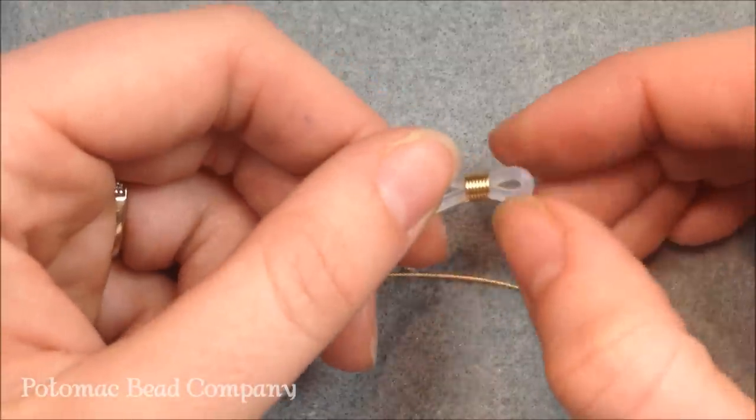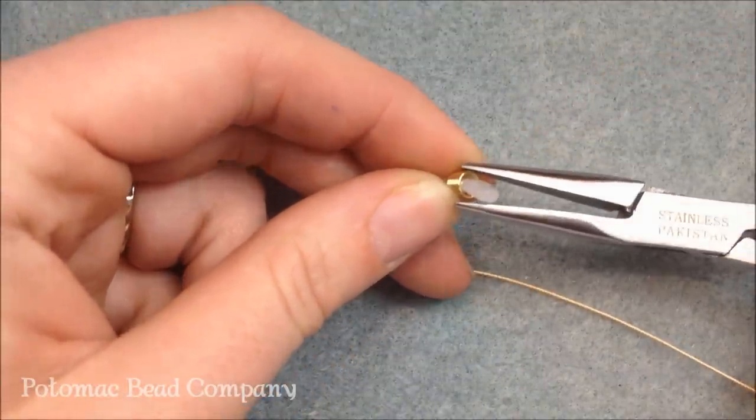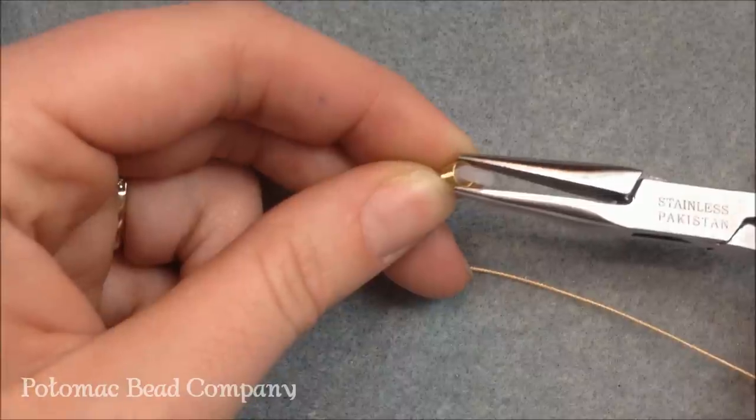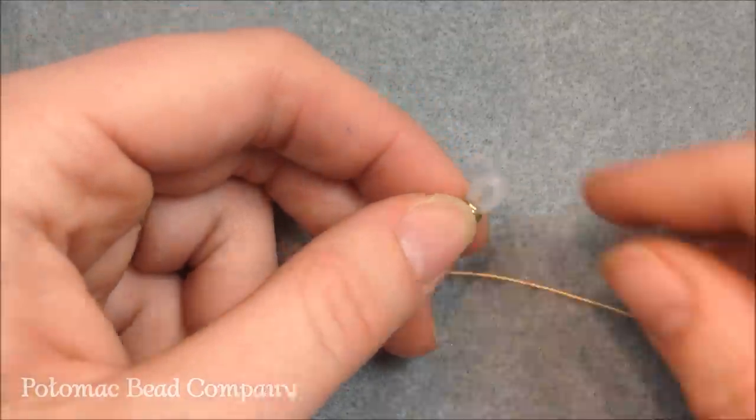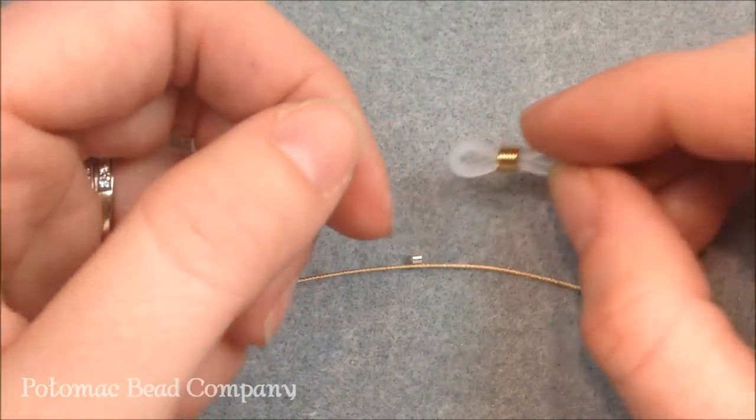What you can do is if you have a pair that you use regularly, you can actually take your flat nose pliers and you can pinch that down, that last little one down, in order to hold it in place so it does not slide anymore after you decide what glasses you want to wear it on.